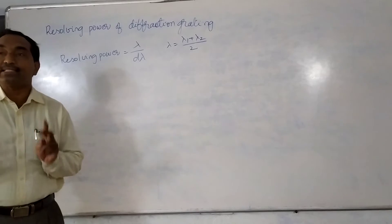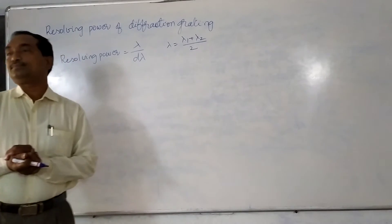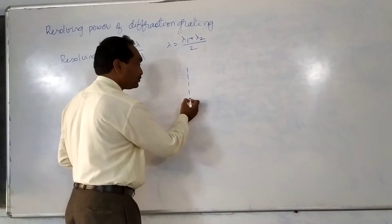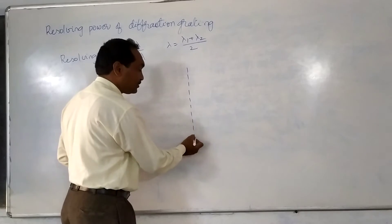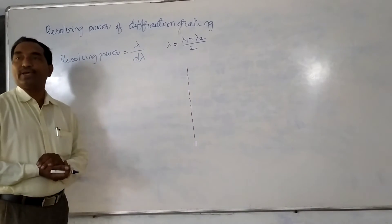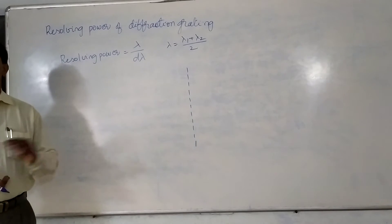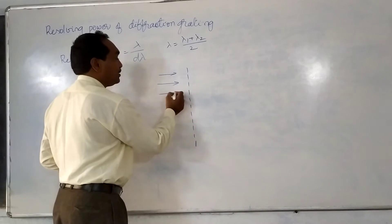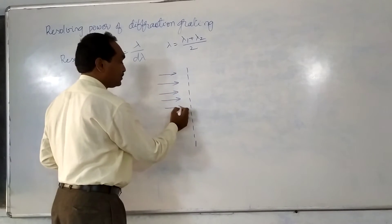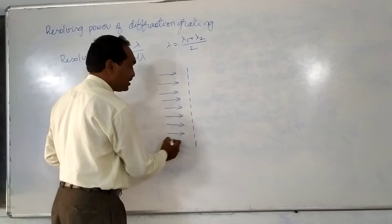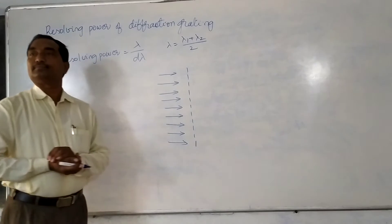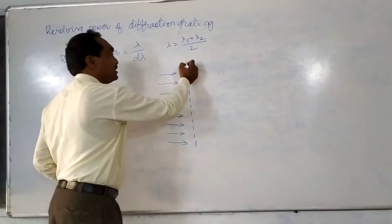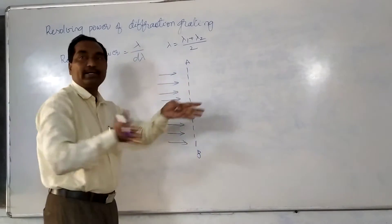Then only we can distinguish two spectral lines individually. For example, consider this diffraction grating containing N slits. We are discussing Fraunhofer diffraction, so the wavefront is a plane wavefront incident on the diffraction grating. In a plane wavefront, the wave rays are parallel to each other. These rays are diffracted through the slits of the diffraction grating and diffracted into different angles.